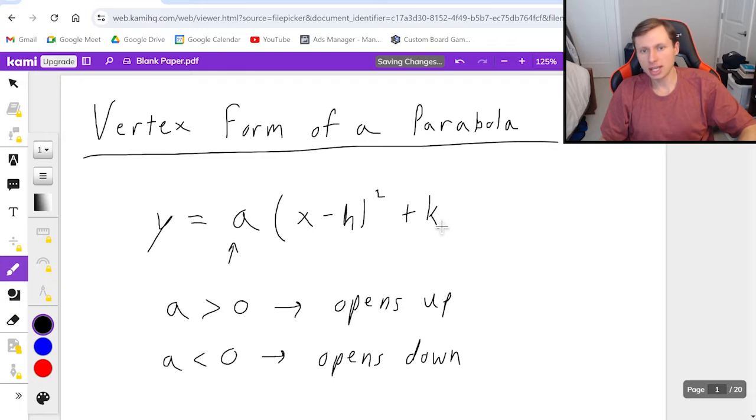Then for h and k, h and k is the vertex of your parabola. So h comma k. You will notice that since it's minus h, the x value will be flipped.